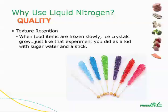The next quality benefit is texture retention. Think about the ripe, firm texture of strawberries. If we freeze strawberries, we do so in order to preserve their quality. But when the water freezes, it forms crystals. This is similar to that experiment you did as a kid — you made a high sugar syrup and left a stick in the syrup for a long period of time. Slowly, large sugar crystals formed on the stick. When you freeze slowly, water forms crystals too. These crystals, compared to the sugar crystals, are pretty small. However, compared to the cell structure of the food, these ice crystals are very large.